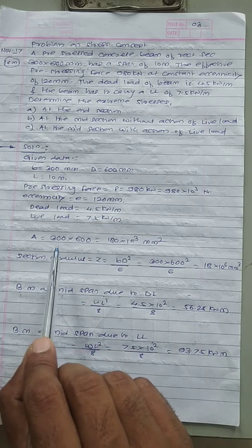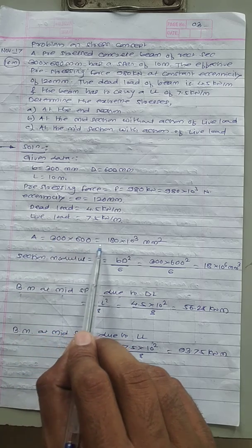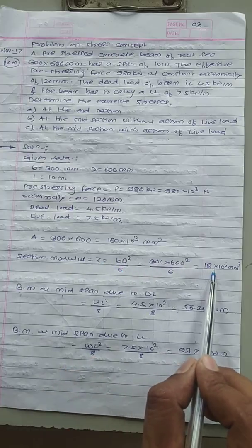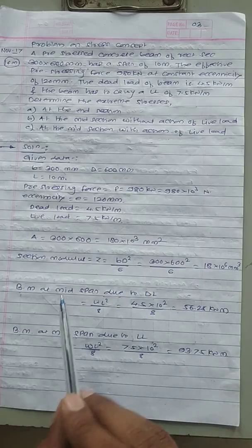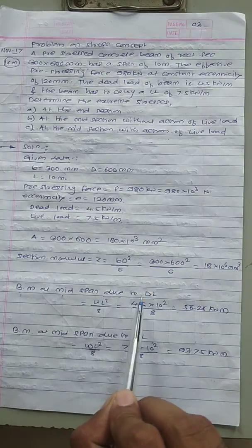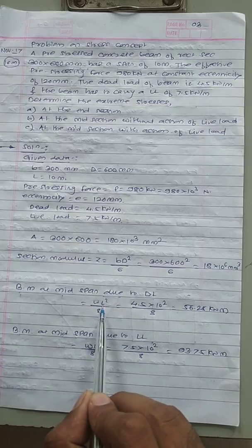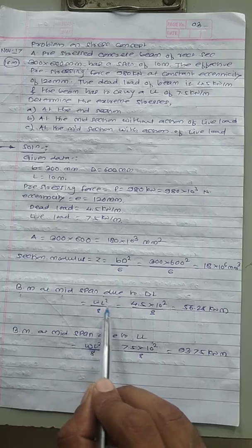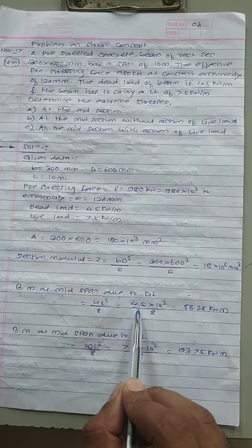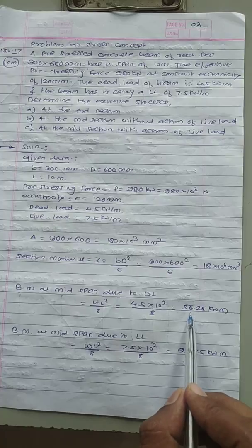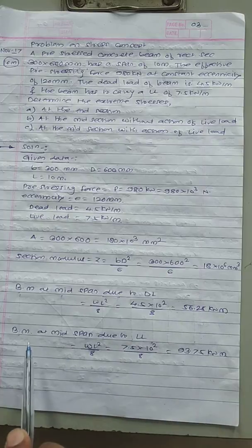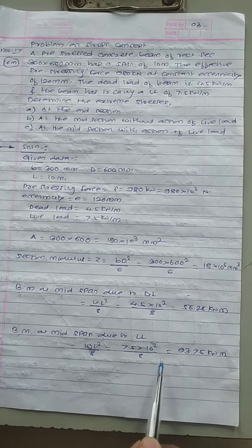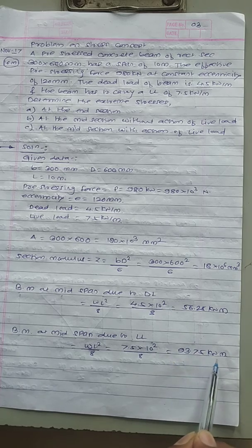Calculating the area: A = 300 × 600 = 180 × 10³ mm². Section modulus Z = BD²/6 = 18 × 10⁶ mm³. For the simply supported beam with UDL, maximum bending moment = WL²/8. Bending moment due to dead load (W = 4.5 kN/m) = 56.25 kN·m. Bending moment due to live load (W = 7.5 kN/m) = 93.75 kN·m.